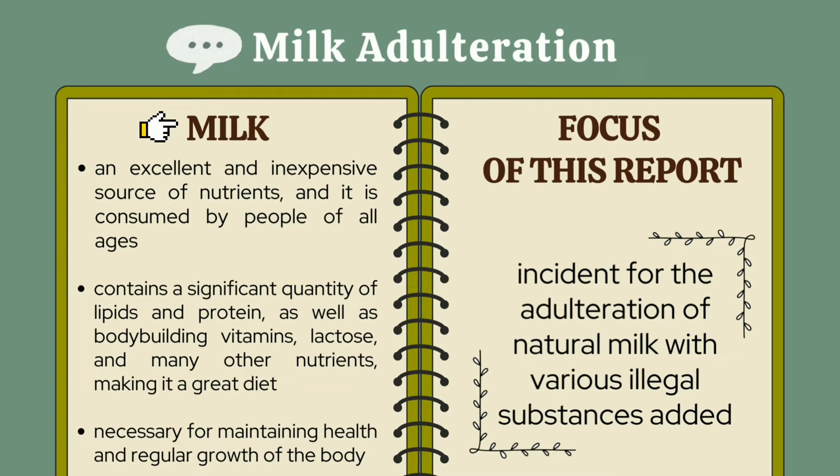Nevertheless, milk is readily adulterated everywhere across the world, with the situation being substantially worse in undeveloped and developing nations due to a lack of sufficient surveillance and law enforcement. Milk adulteration is a typical type of food fraud that has become a major social issue in recent years. Hence, in this report, we mainly focus on the adulteration of natural milk with various illegal substances added.